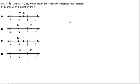Okay, so in this problem, we know that k equals the square root of 31, and m equals the square root of 36. We want to know, if we plot these on a number line, where should those points go?